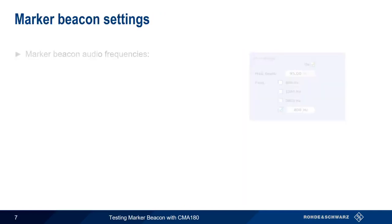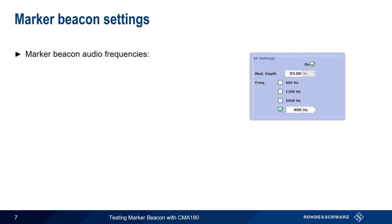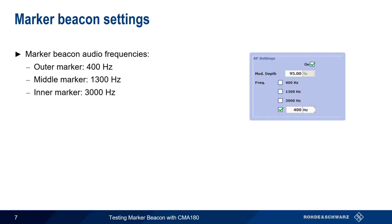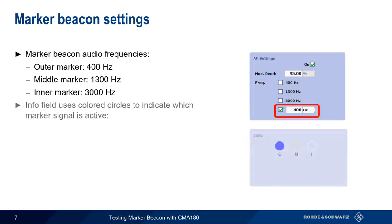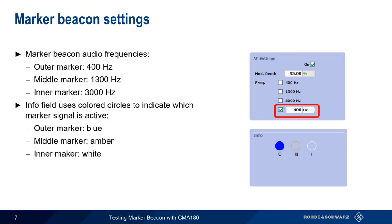Recall that marker beacons are differentiated in part by their audio frequencies. Outer markers typically use 400 Hz, middle markers use 1300 Hz, and inner markers use 3000 Hz. These are available as presets on the CMA-180, and the frequency can also be manually specified if necessary. The info field uses circles with the standard colors to indicate which marker signal is active: blue stands for outer marker, amber for middle marker, and white for inner marker.